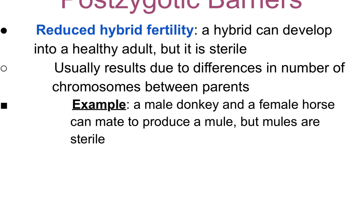Reduced hybrid fertility means the hybrid can develop into a healthy adult but is sterile. This usually results from different numbers of chromosomes between parents. The classic example is a male donkey and a female horse: they can mate to produce a mule, but mules are often sterile. They produce unbalanced gametes that can't fertilize another donkey, horse, or mule.